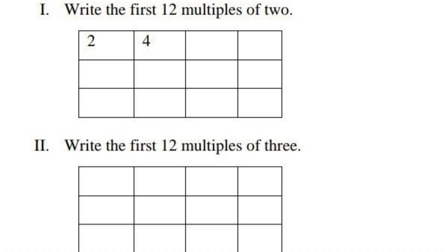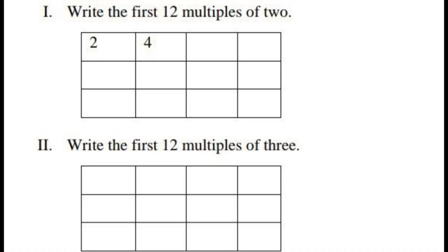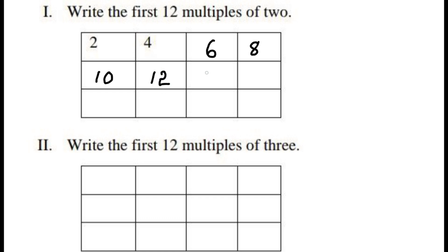Now let us find the multiples of the given numbers. The first question is: write the first 12 multiples of 2. The first multiple is 2 itself, then 4, then 6, then 8, then 10, then 12, then 14, then 16, then 18, then 20.